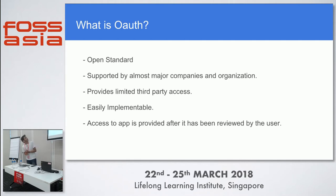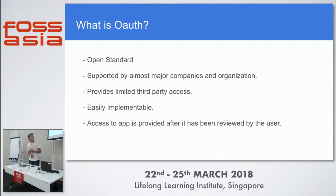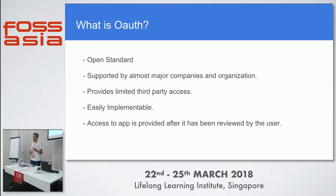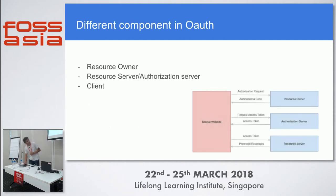OAuth2 is an open standard supported by major companies and organizations. It provides limited third-party access, so apps don't get full access to your account — you can choose which permissions and tasks an app can perform on your behalf. It is easily implementable by anyone with basic coding skills. Access to the app is provided only after it has been reviewed by the user. There are three major components: resource owner, resource server, authorization server, and client — the client and app are the same thing.